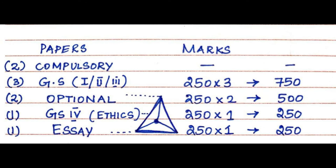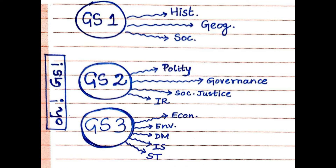Since every paper in UPSC Mains examination is of 250 marks, there is a broad misconception that each has equal weightage. But in reality, it is not. Since there are two compulsory papers in UPSC Mains and they are just qualifying, they carry no marks. With respect to general studies papers, there are four in number. Let us consider the first three general studies papers, which are 250 marks each, adding up to 750. But each general studies paper is itself further divisible into many subjects.